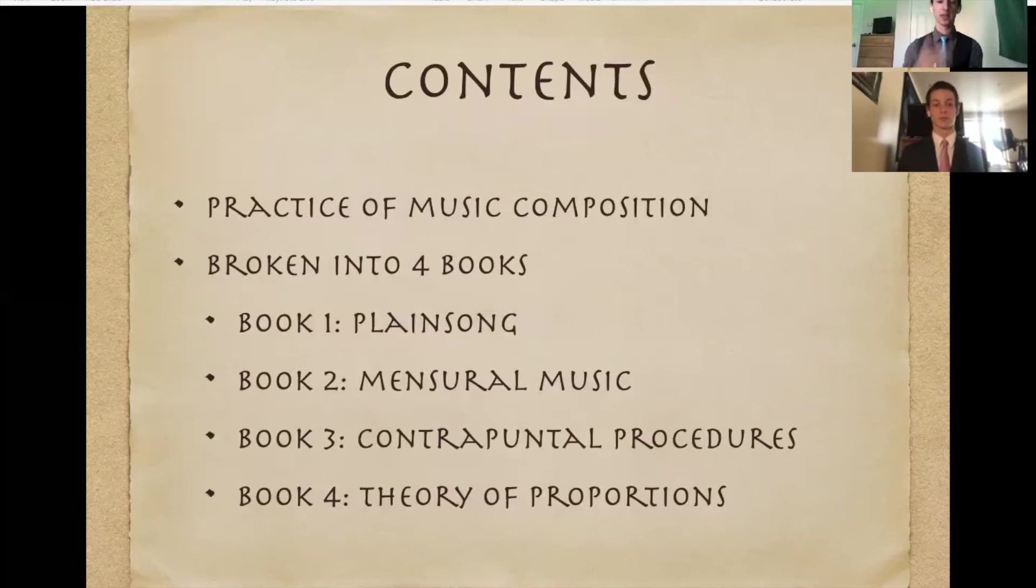So the actual text is broken up into four books. The entirety is explaining musical composition and how to notate it and how to do it really. So book one is plain song, book two is mensural music, three is contrapuntal procedure, and book four is his individual theory of proportions.